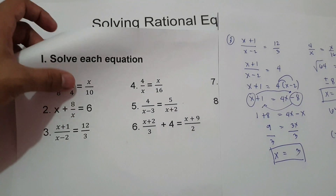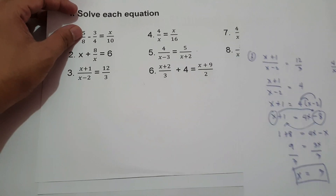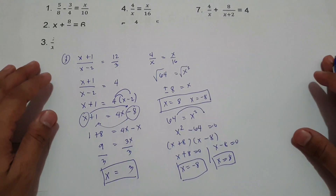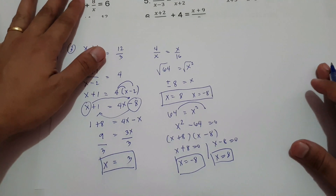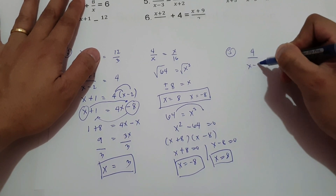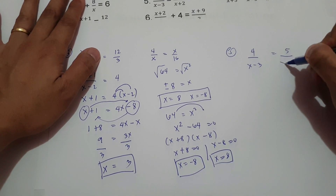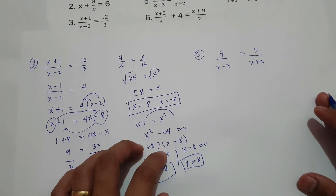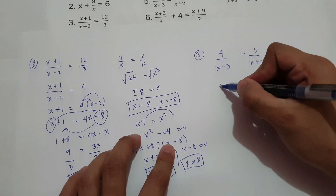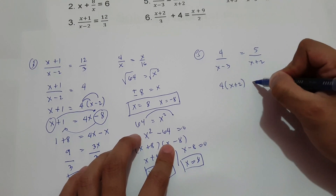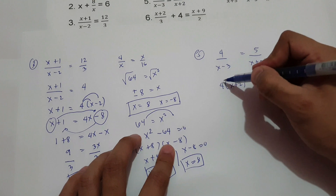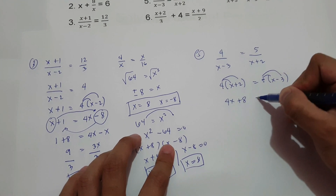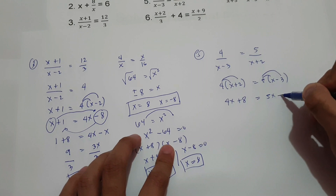Next, let's have number 5: 4 over x minus 3 equals 5 over x plus 2. This has the same pattern as number 3 — we simply cross multiply. So 4 multiplied by x plus 2 equals 5 times x minus 3. Using the distributive property: 4 times x is 4x, 4 times 2 is 8, 5 times x is 5x, and 5 times negative 3 is negative 15.